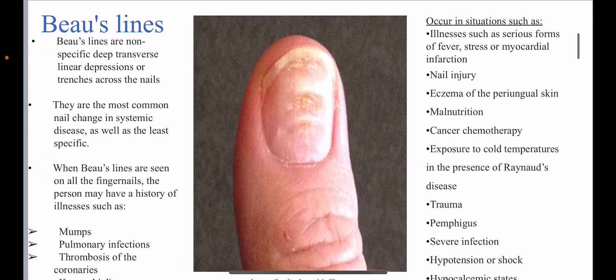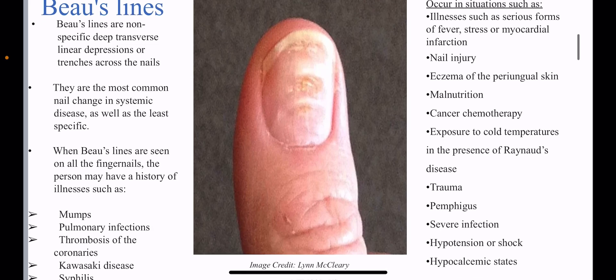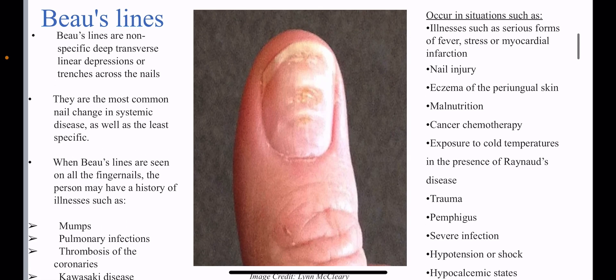Beau's lines are non-specific deep transverse linear depressions or trenches across the nails. They are the most common nail change in systemic disease, as well as the least specific one. When Beau's lines are seen on all the fingernails, the person may have a history of mumps, pulmonary infection, thrombosis of coronaries, Kawasaki disease, syphilis, or hypoparathyroidism.